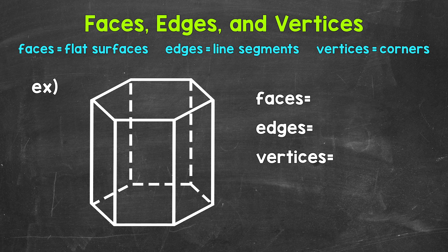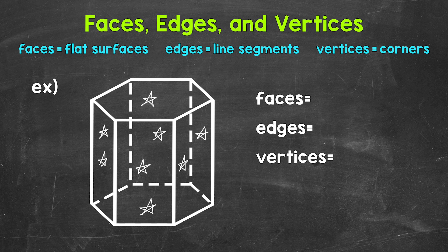We will start with the face in the front, so this is one. Now let's work our way around. This is two faces, and then as we go to the back, we have three faces, four faces, five faces, and then back up front here, six faces. Then we have the hexagon at the bottom here, so that's seven faces, and then the top. So eight total faces.